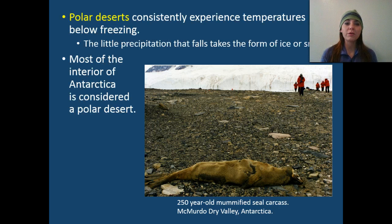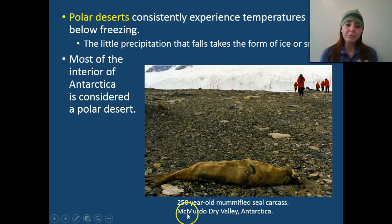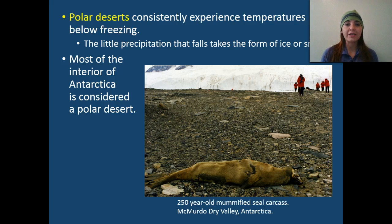We have our polar deserts, which consistently experience temperatures below freezing. They have very little precipitation aside from snow and ice — they don't typically get liquid precipitation in the form of rain. Most of the interior of Antarctica is considered a polar desert. Something cool: this is actually a 250-year-old mummified seal carcass that, because of those temperatures, was preserved for people to look at and get an idea of the animals that existed there that many years ago.